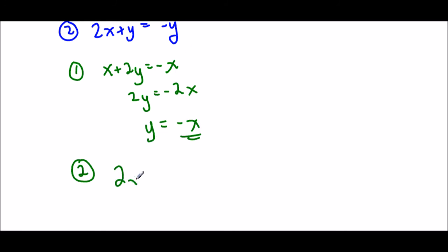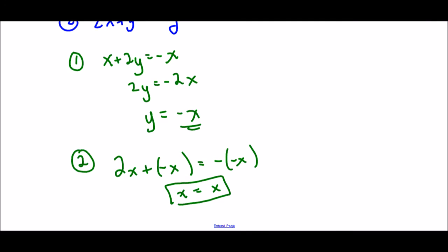So let's see what happens when we take that and sub that value of y into the second equation. So the second equation says 2x plus y equals negative y. And here's the value of y we just found. So 2x minus x is x. So I have a statement that says x equals x, which is obviously true no matter what.